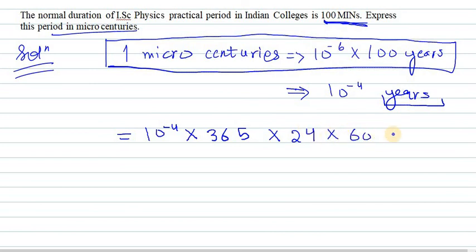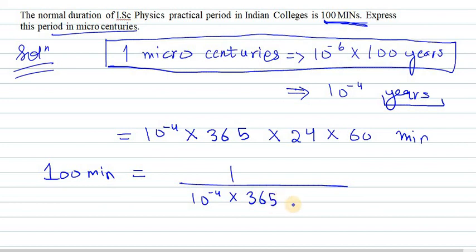Now we need to solve for 100 minutes. So for 100 minutes, we have 1 divided by (10^-4 × 365 × 24 × 60) multiplied by 100.